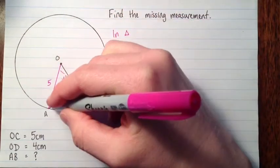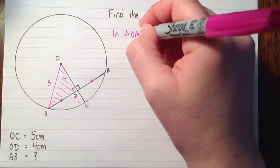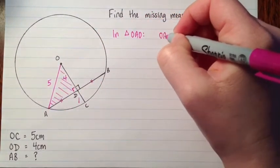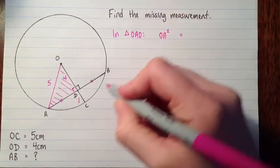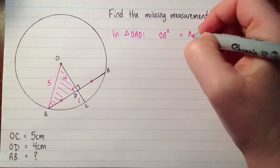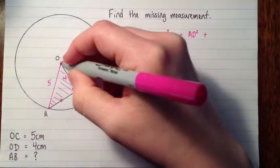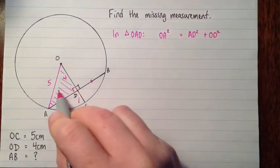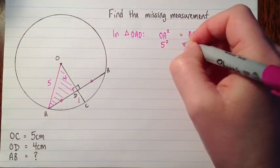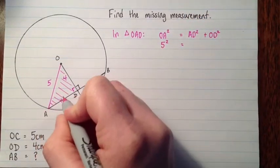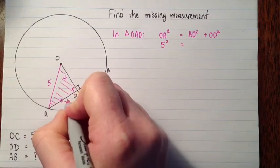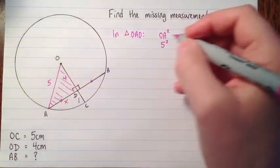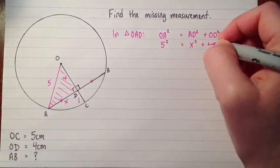So in triangle OAD, we have the hypotenuse squared. So OA squared equals AD squared plus OD squared. Now I'll substitute, so OA is 5. So 5 squared equals AD, I don't have a length for that, I'll call it X. X squared plus OD is 4, so it's 4 squared.